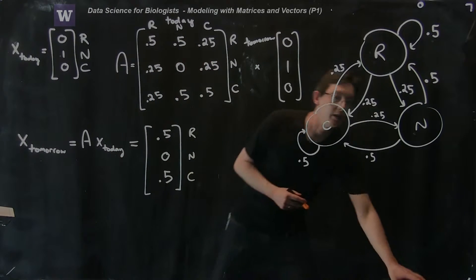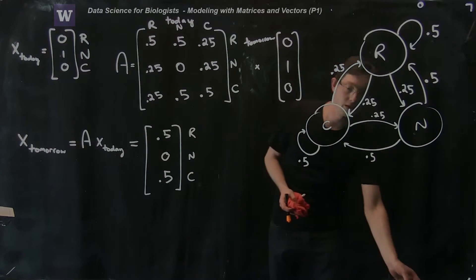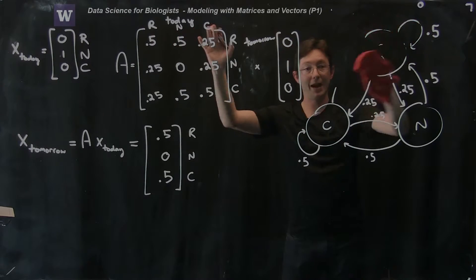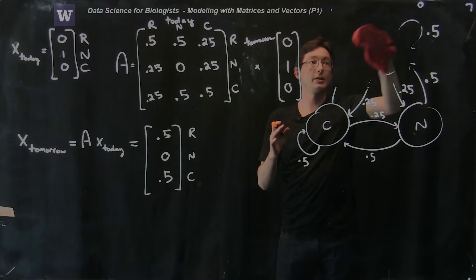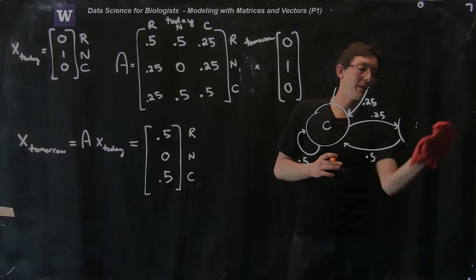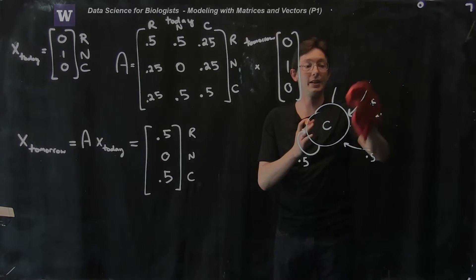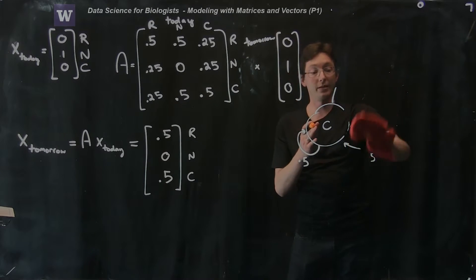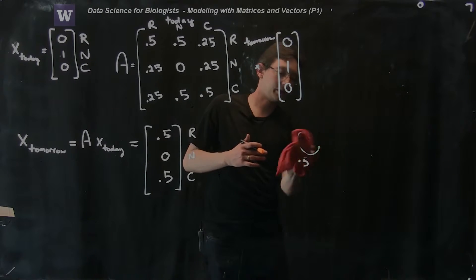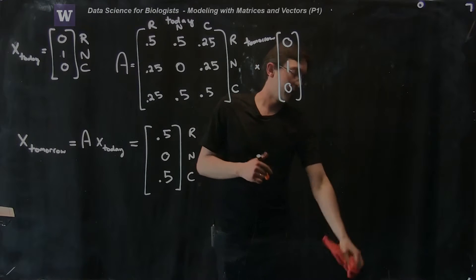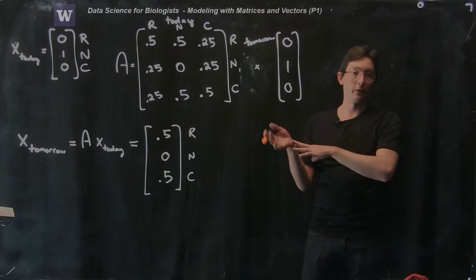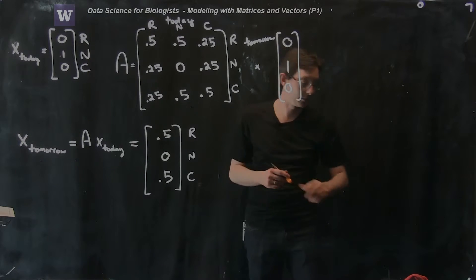This is an extremely useful modeling tool. From a picture of what's happening, we derived a mathematical formalism where we write down the probability of transition in a matrix A. That matrix A allows us to take our probability of weather today and step it forward to tomorrow. And there's no reason to stop at tomorrow — we could step from day one to day two to day three and so forth.